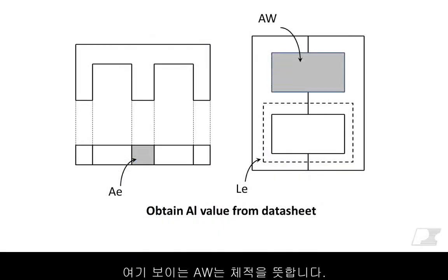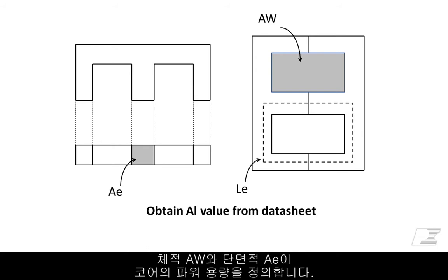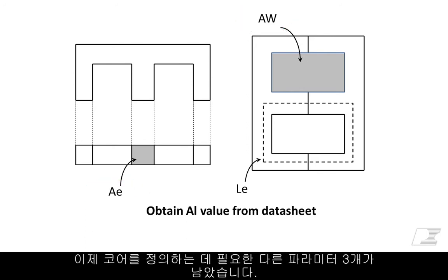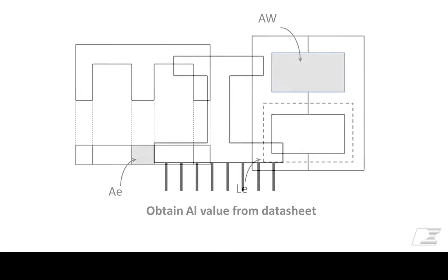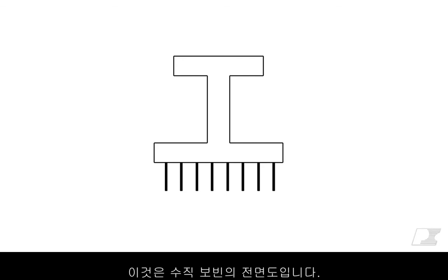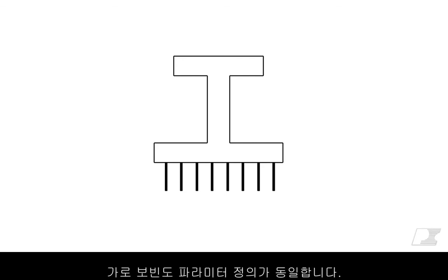AW is the window area as shown here. The product of the window area AW and cross-sectional area AE define the power processing capability of the core. That leaves us with the other three parameters required in defining the core. This is a front view of a vertical bobbin. The parameter definitions remain the same for horizontal bobbins.